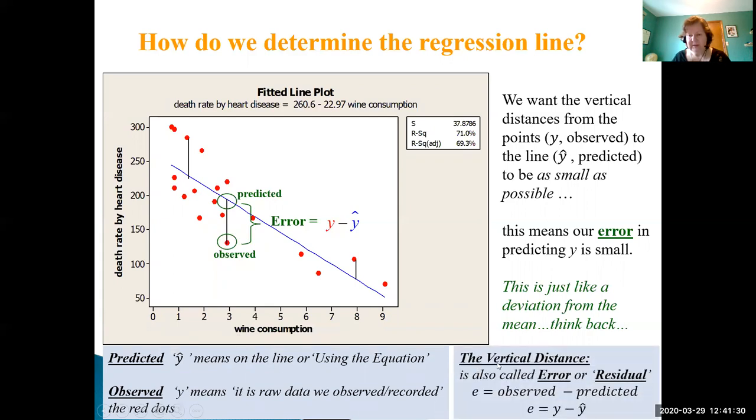These vertical distances are called errors or residuals, and we have the symbol e for error equals the observed minus the predicted value. So the error is y minus y hat. When we have y minus y hat, well y is higher in this case than y hat, so that'll be a positive error. In this case here, y minus y hat, this is a smaller number take away a bigger number, that's going to be a negative residual.